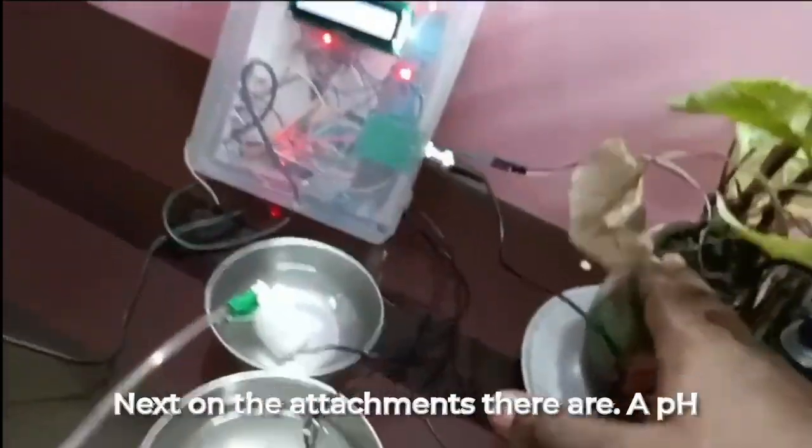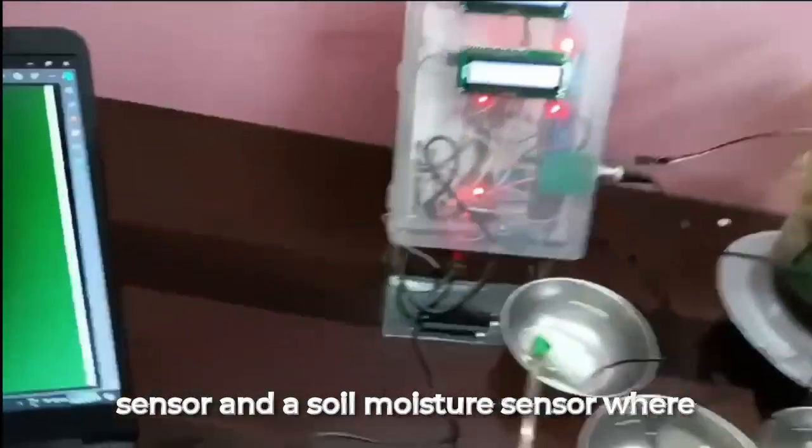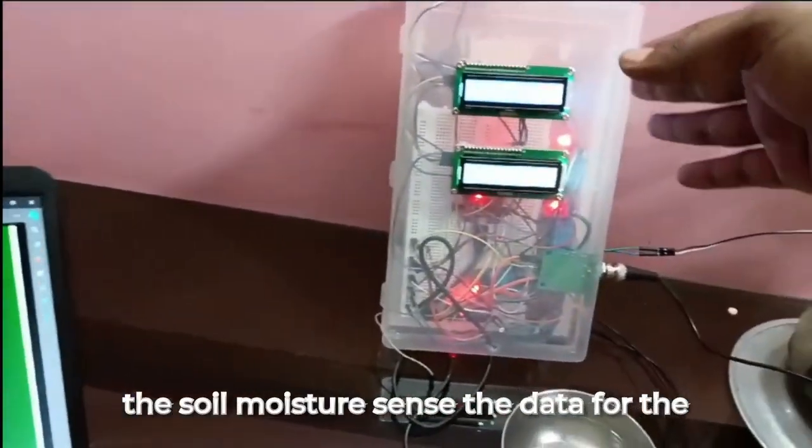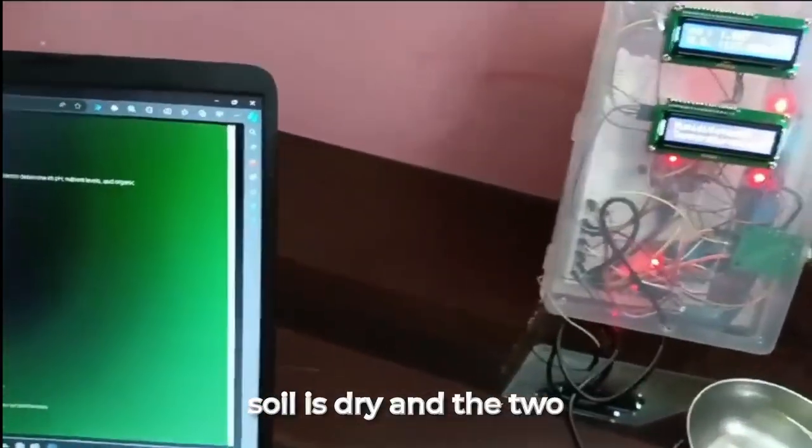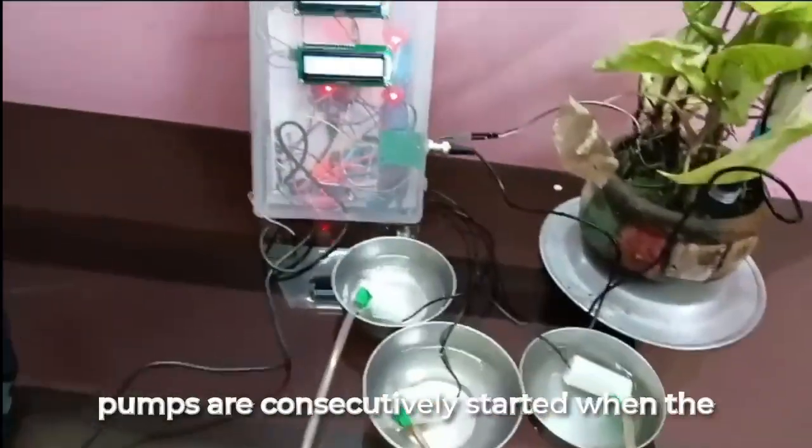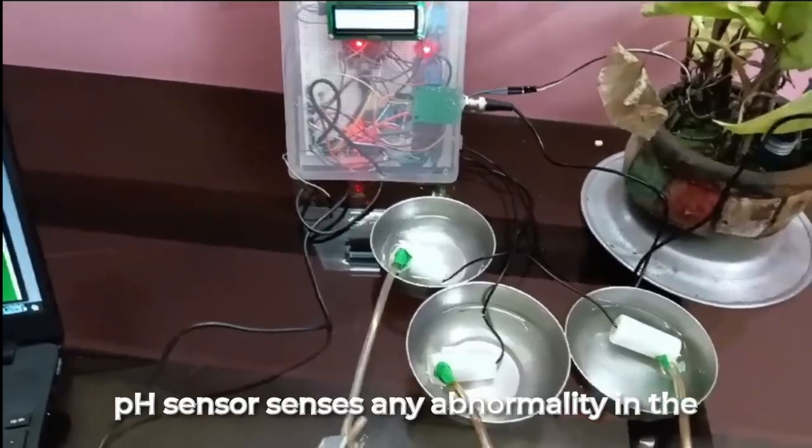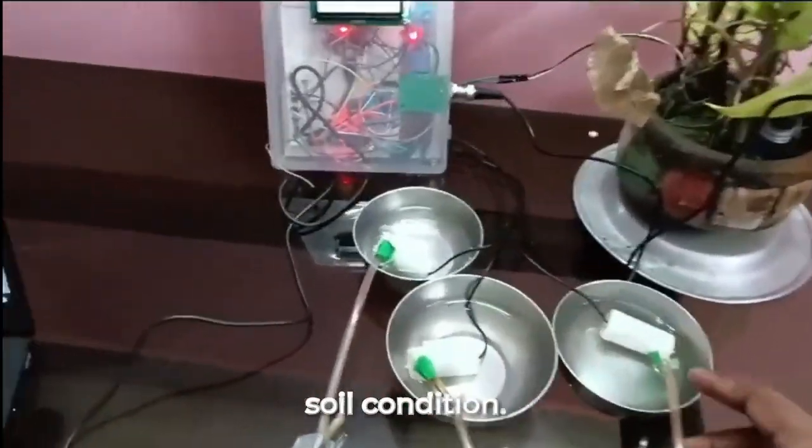Next on the attachments, there are a pH sensor and a soil moisture sensor, where the soil moisture sends the data for the starting of the solution pump when the soil is dry. And the two pumps are consecutively started when the pH sensor senses any abnormality in the soil condition.